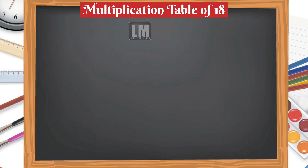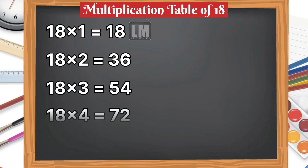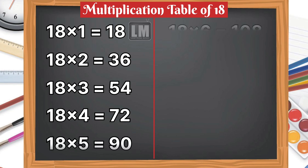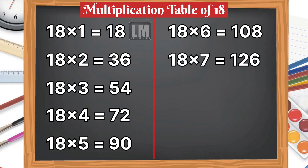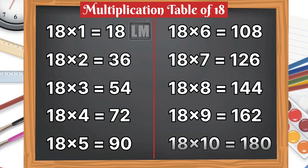Let's learn table of 18. 18 1s are 18, 18 2s are 36, 18 3s are 54, 18 4s are 72, 18 5s are 90, 18 6s are 108, 18 7s are 126, 18 8s are 144, 18 9s are 162, 18 10s are 180.